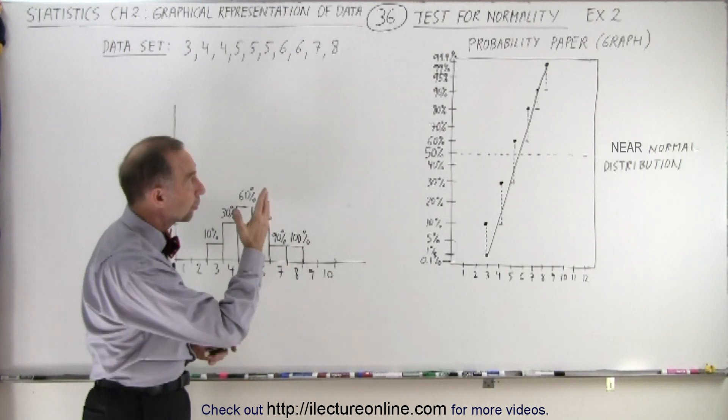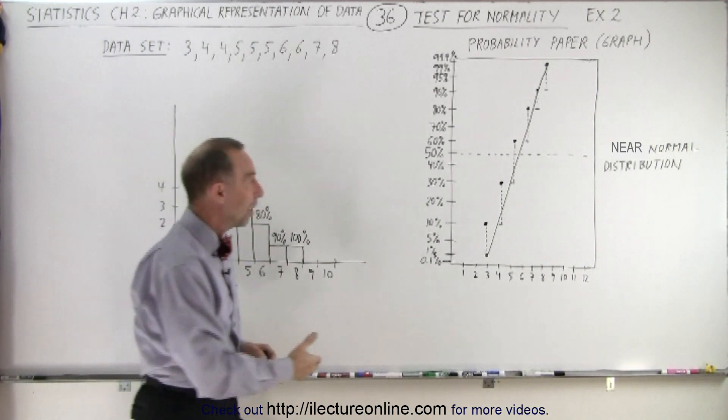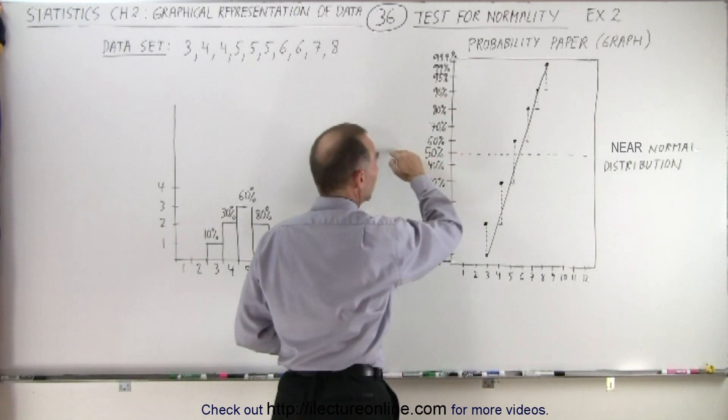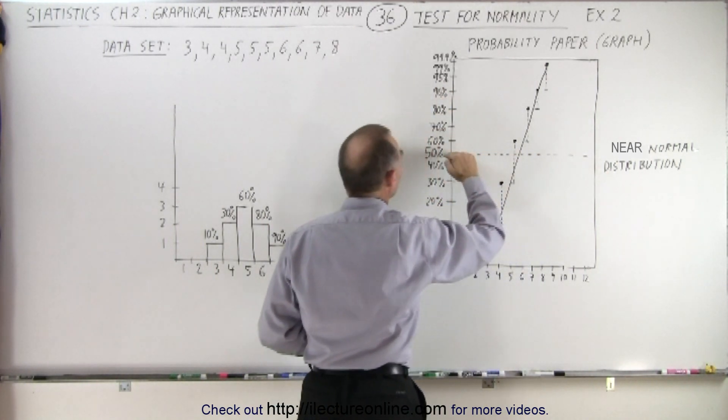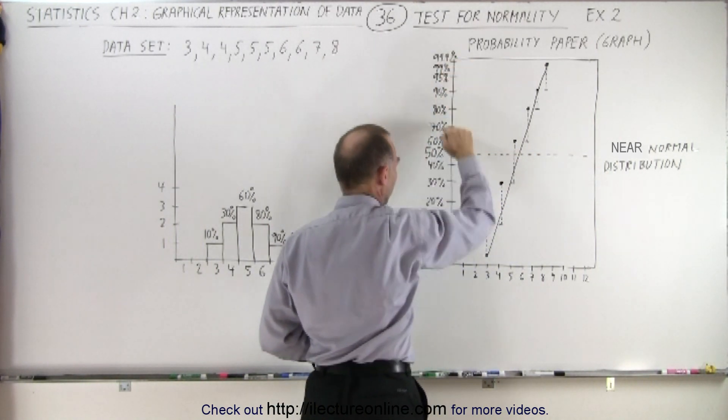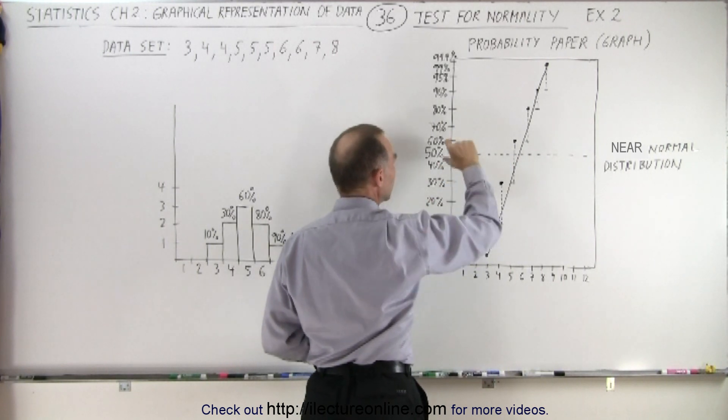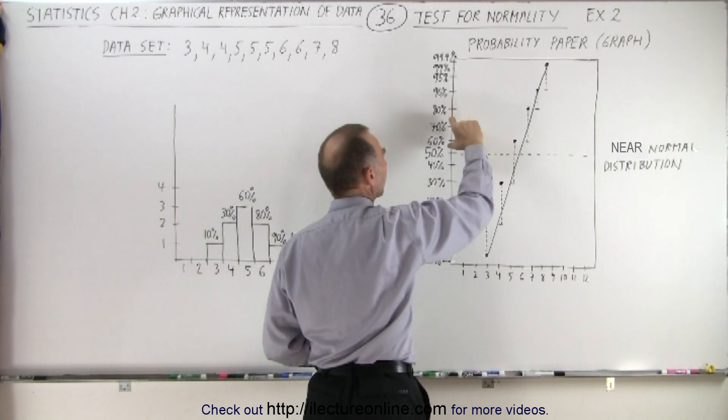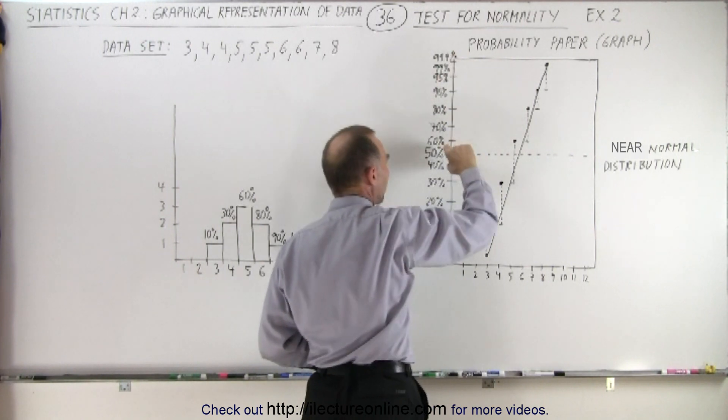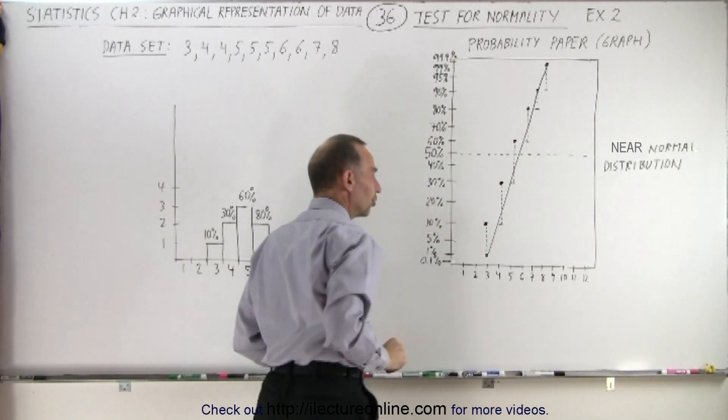Again, we have what we call probability paper or a probability graph. In the middle of the paper we're at the 50% point, then we go up to 100% and down to 0%. Notice that the distance between consecutive 10% points gets larger and larger as you go up and as you go down.